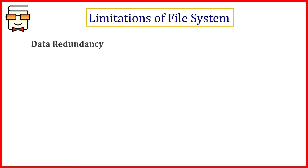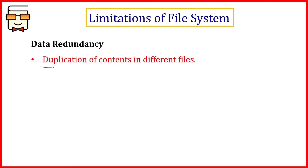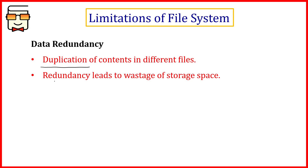There are certain limitations of the file system that led to the development of databases. The first limitation is data redundancy — duplication of the same contents in different files. Redundancy also leads to wastage of storage space because if the same information is stored at different positions, each of these files will take up more space compared to a situation where one kind of data is present only in one file.